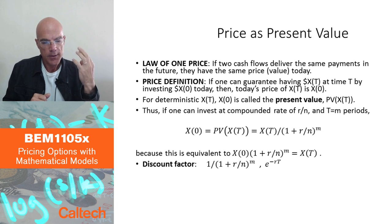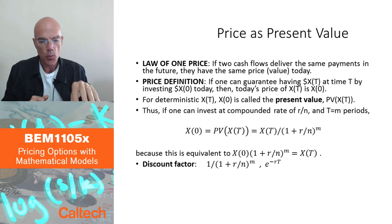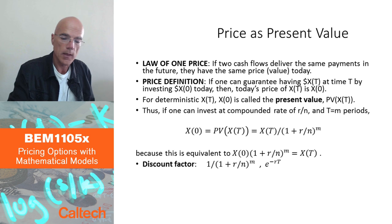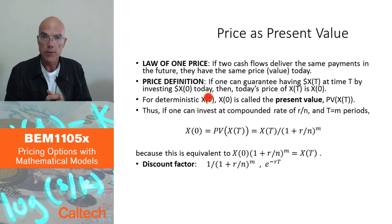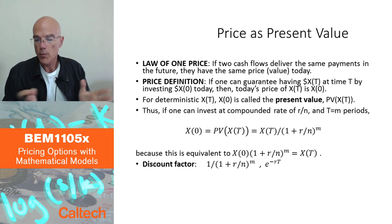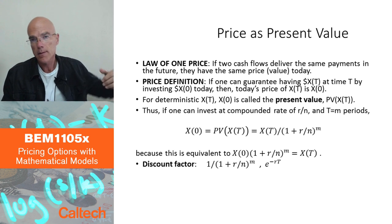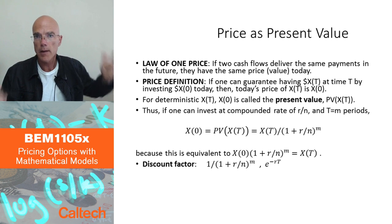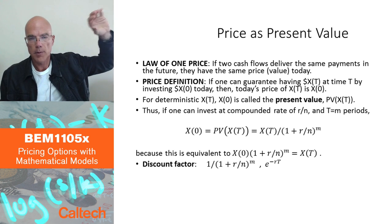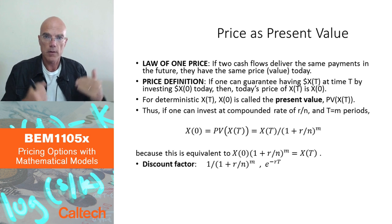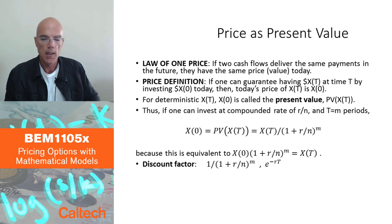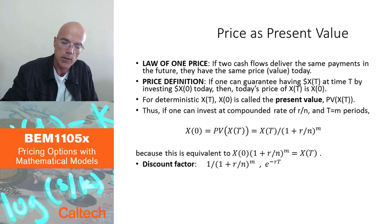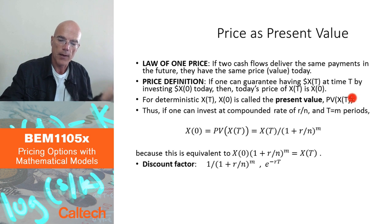For deterministic payoffs, if X(T) = $105 and the bank lends and borrows at 5%, then after one year I can get $105 by investing $100 today. So the price is $100. The present value of $105 one year from now at 5% is $100, because by investing $100 I can have $105 in the future.